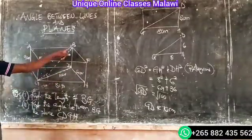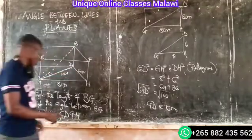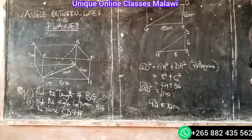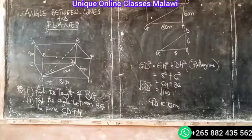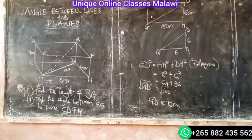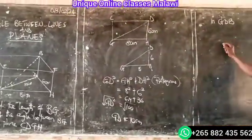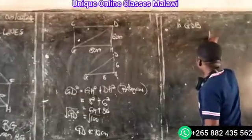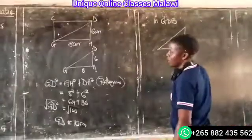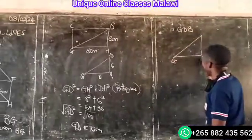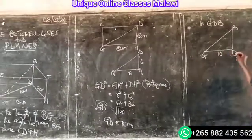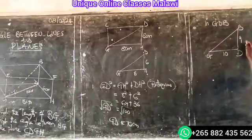We can now work with this triangle. In the triangle, we have GD and BG. GD is 10. So we have 10 squared. The height is 9.